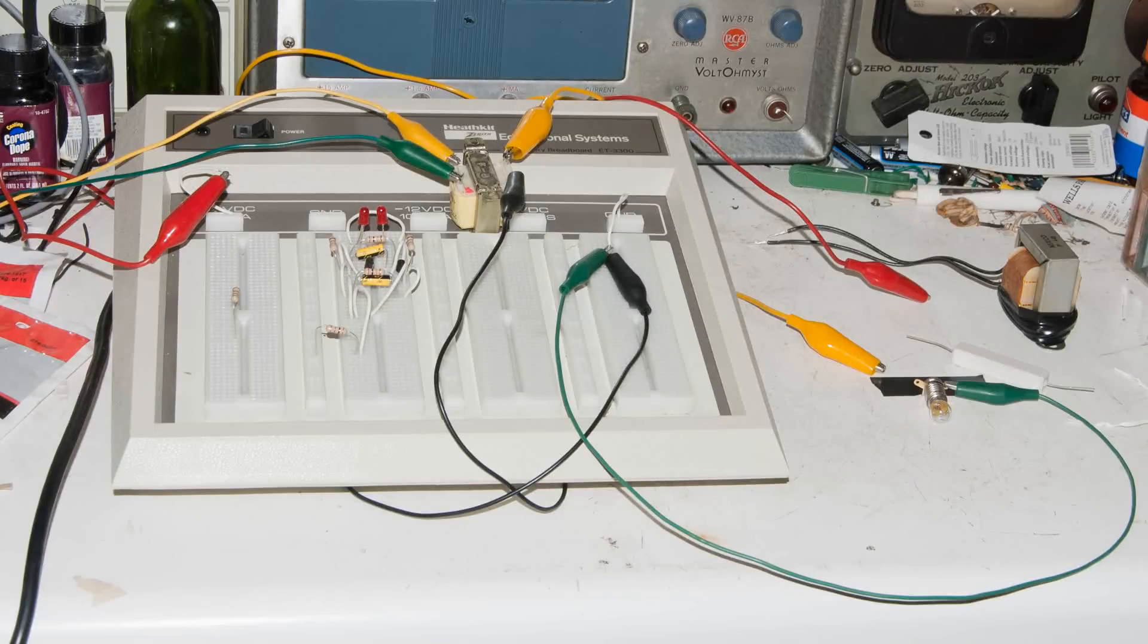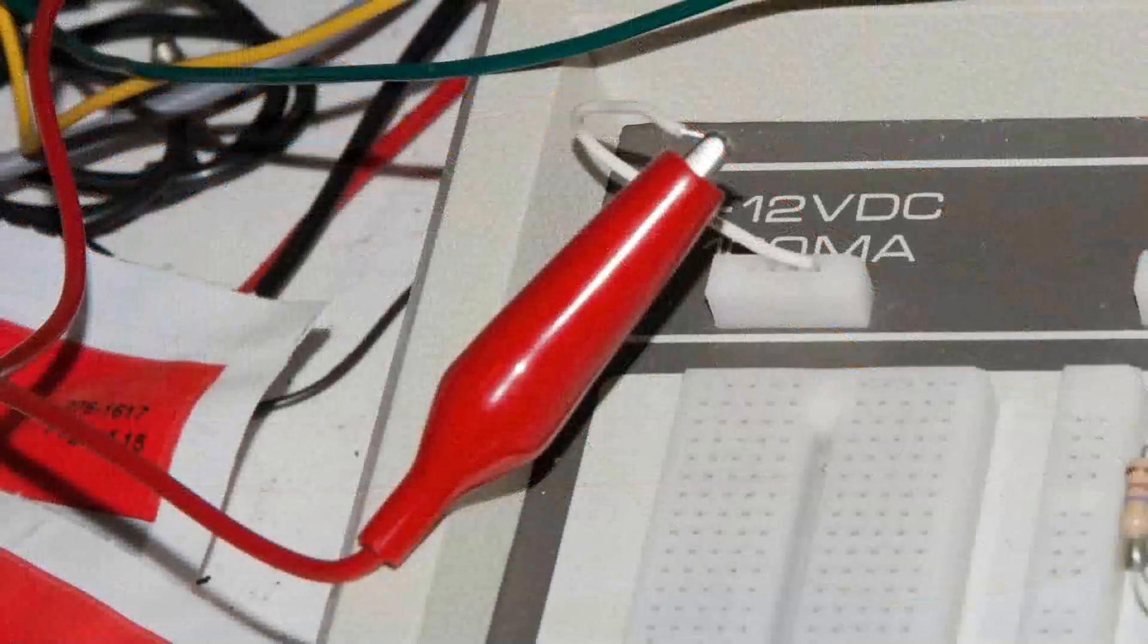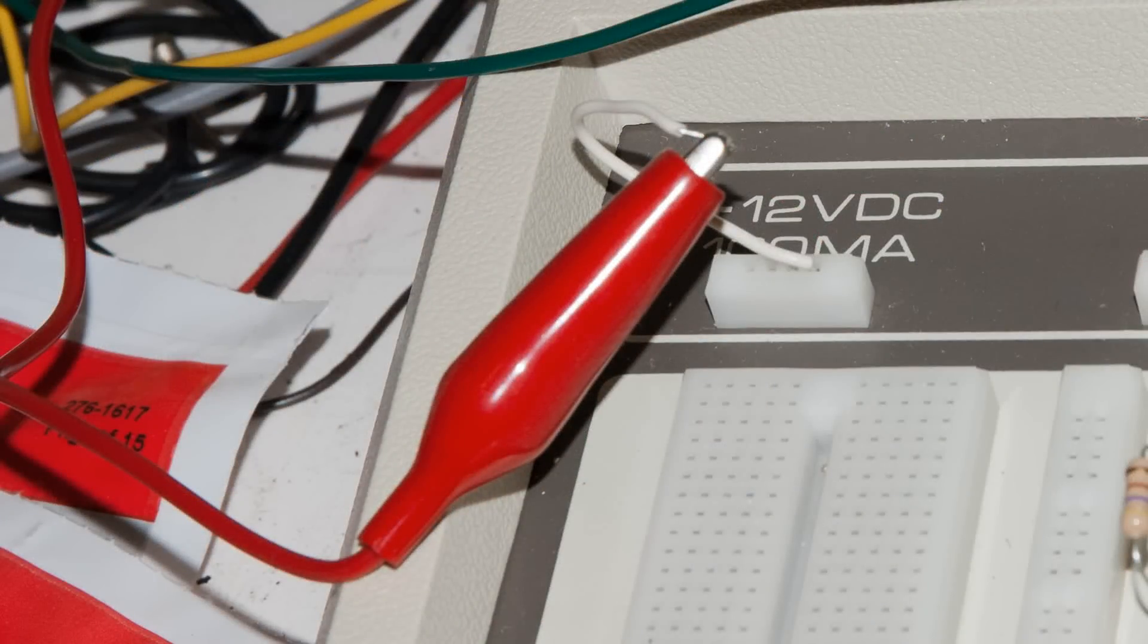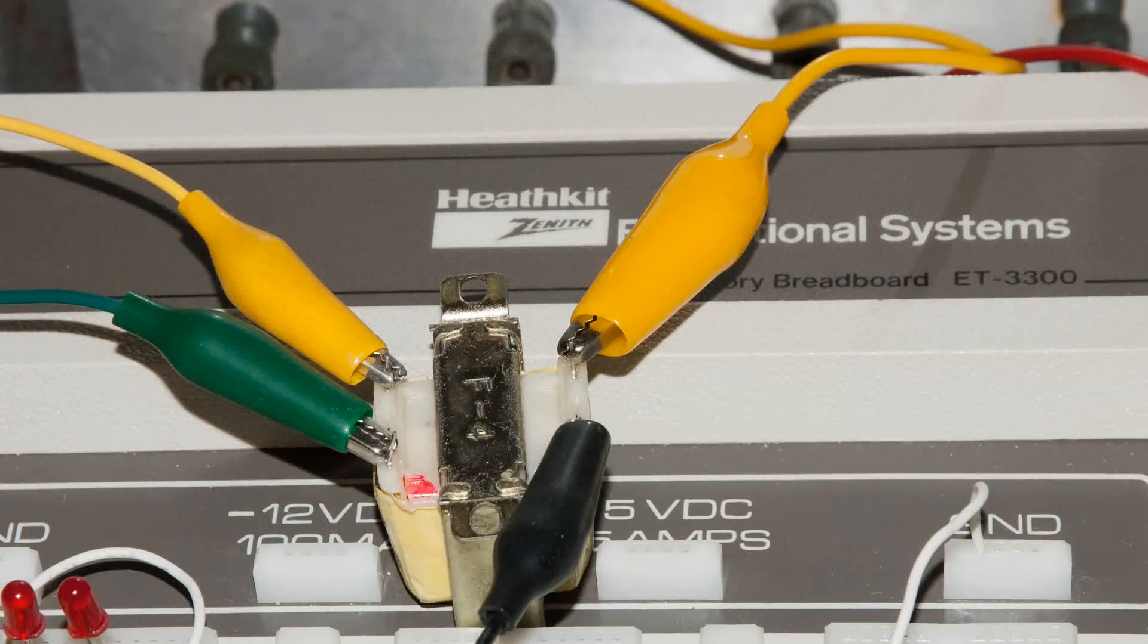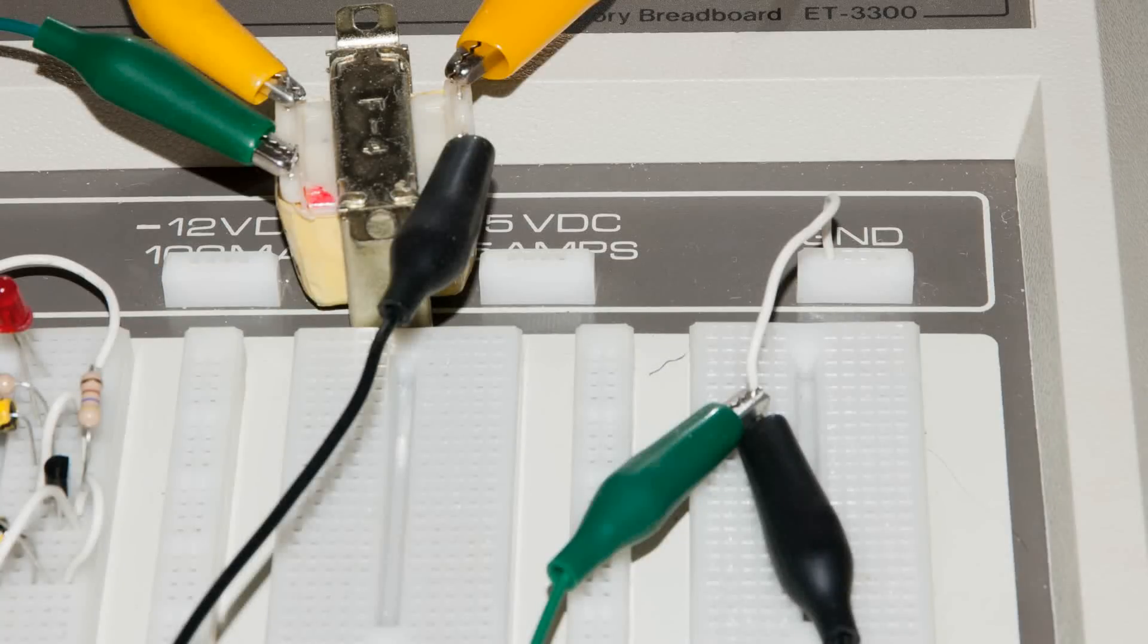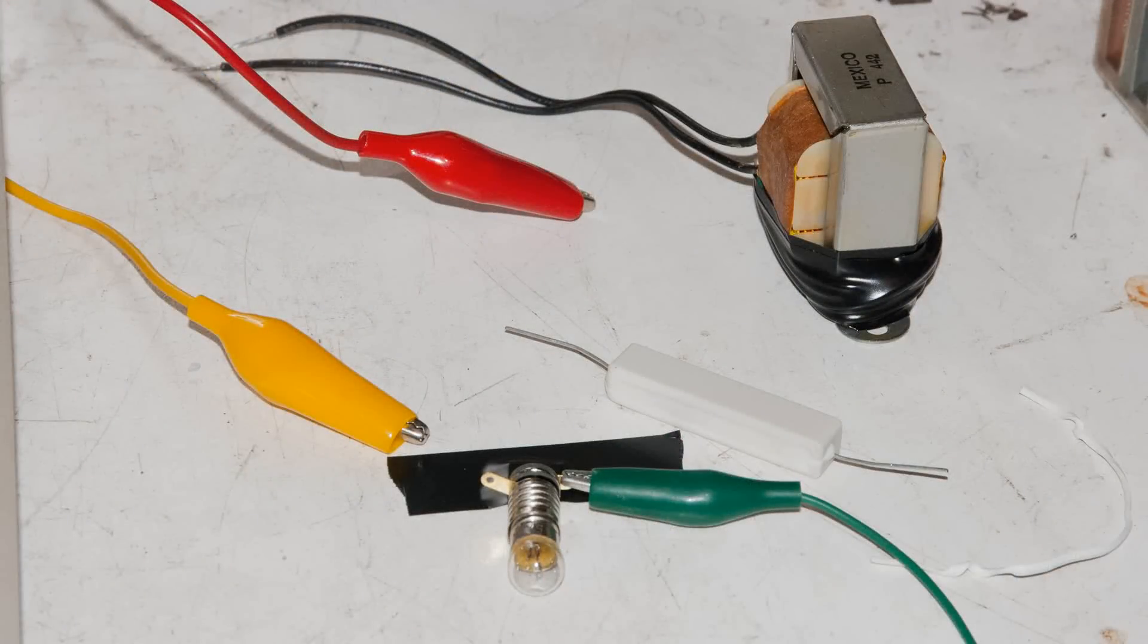So here's the setup. I'm going to use my Heathkit trainer to supply the 12 volts DC, and here I have a small 12 volt AC transformer for the other part of the power supply. And here in the lower right, this is the common ground connection between the two power supplies and the light bulb that we're going to use.